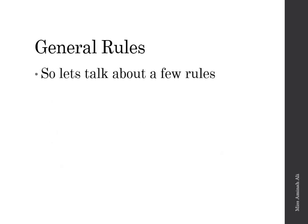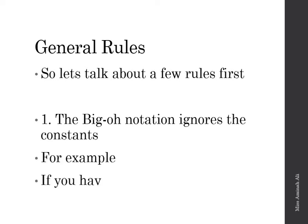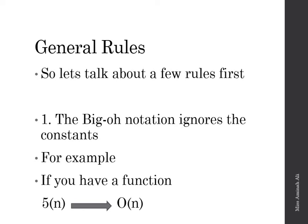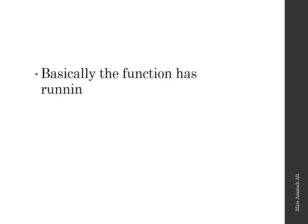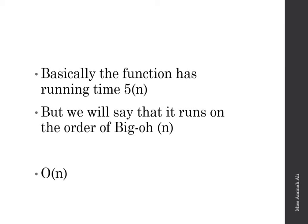So what are the general rules when we talk about Big O notation? The first rule is that Big O notation ignores constants. For example, if we have a function f(n) = 5n, we will say that it runs on the order of O(n) — we drop the constant 5.